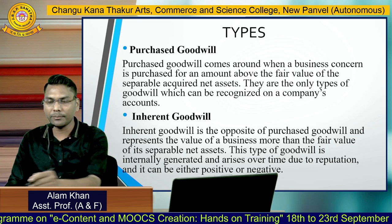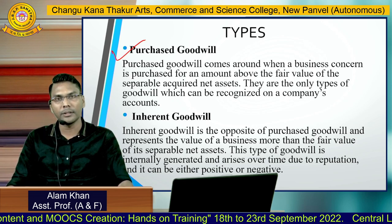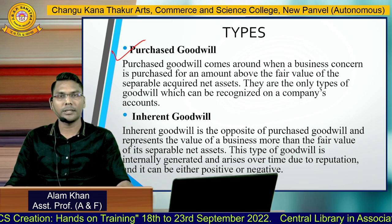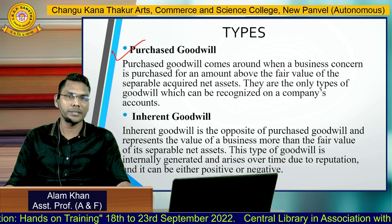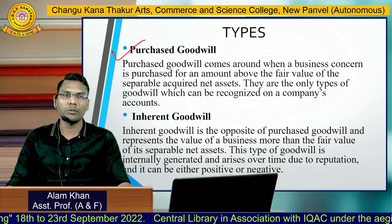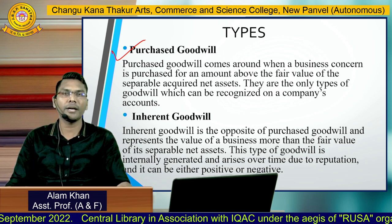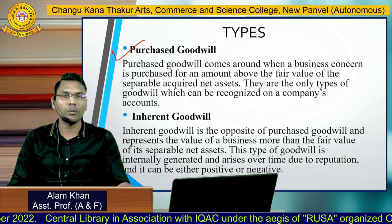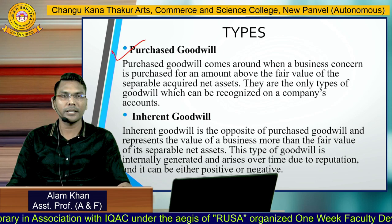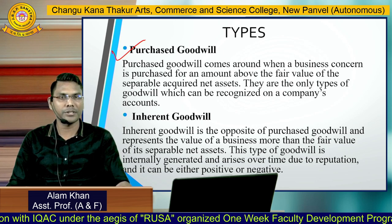There are two types of goodwill. Number one is purchased goodwill. When one company takes over or acquires another company, they have to pay some purchase consideration, and that is called purchased goodwill. Purchased goodwill arises when a business concern is purchased for an amount above the fair value of its separately acquired net assets. This is the only type of goodwill which can be recognized in a company's accounts.